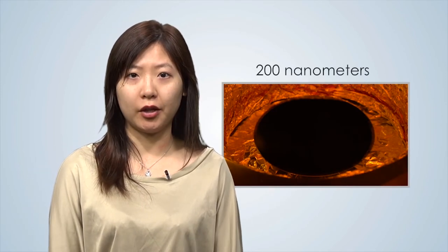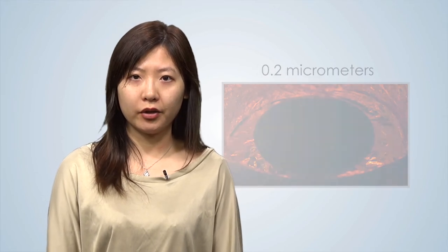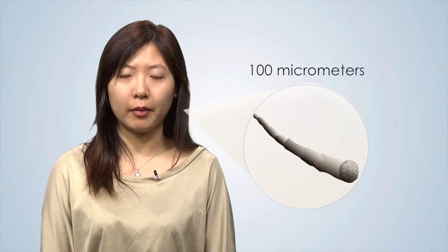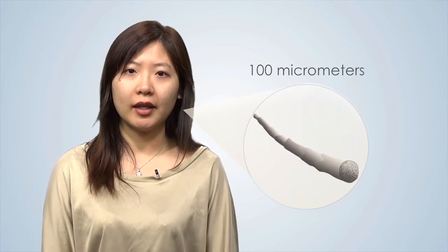This particular resist forms a polymer film that is only 200 nanometers thick. That is 0.2 micrometers. For comparison, the width of a human hair is about 100 micrometers. This truly is a thin film.